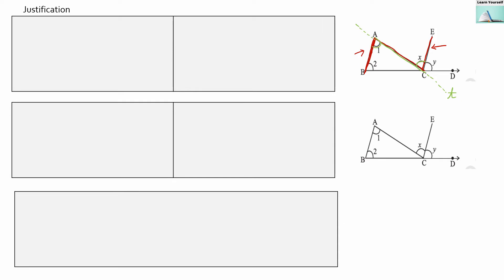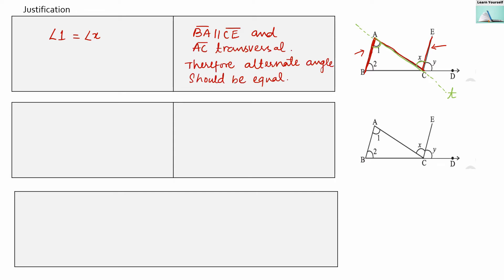If AB is parallel to CE and AC is the transversal, then angle 1 and angle x will become alternate angles, and that's why they are equal. So angle 1 equals angle x. If I draw a rough diagram, this angle and this angle will be alternate angles. If we extend these two lines, this will be our transversal. These two are alternate angles and that's why they should be equal.